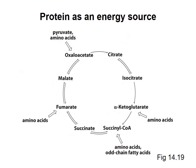Many amino acids, when degraded, give rise to intermediates in glycolysis and the citric acid cycle. This means that proteins can be degraded to make ATP. One gram of protein gives about as much ATP as one gram of carbohydrate.